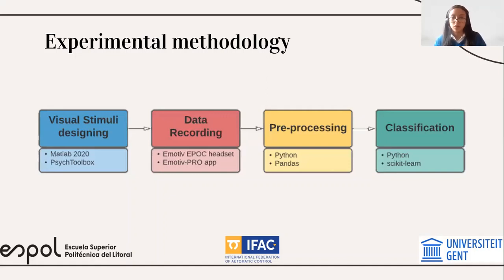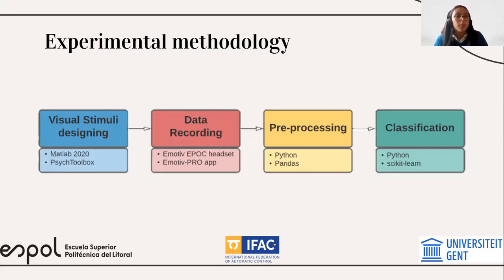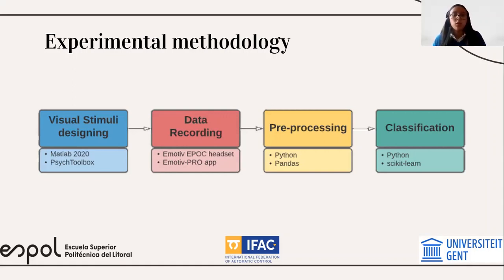For the visual stimuli design, we used MATLAB 2020 and PsychToolbox. PsychToolbox is an open source library that helps you design your own experiment and the way you want your visual stimuli to appear — in this case, squares flashing at different frequencies. It also helps you use precise timing, which is required for this type of experiment. For the data recording, we used the Emotiv Epoch headset and the Emotiv Pro app. For the preprocessing stage, we used Python and Pandas, and for the classification, we used scikit-learn.